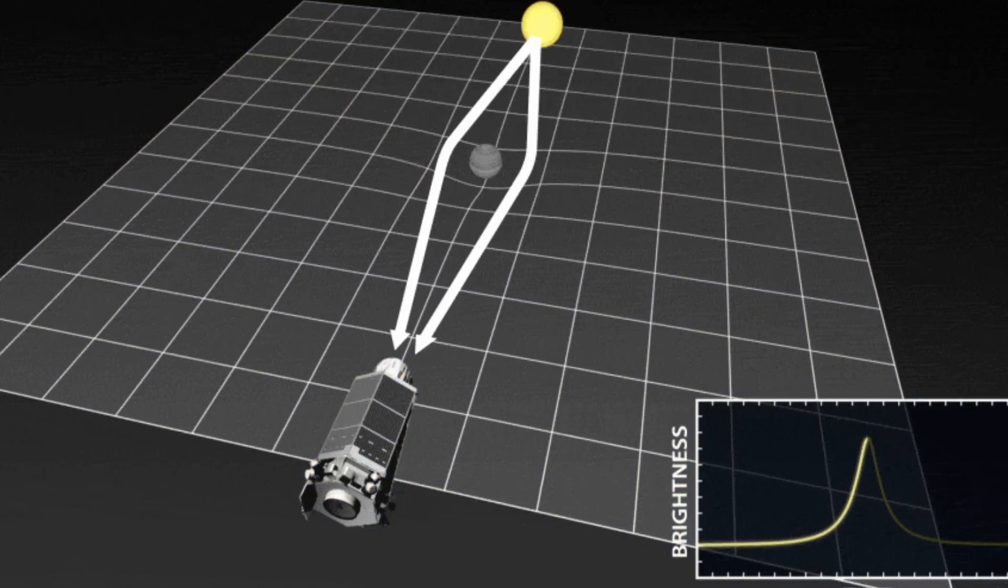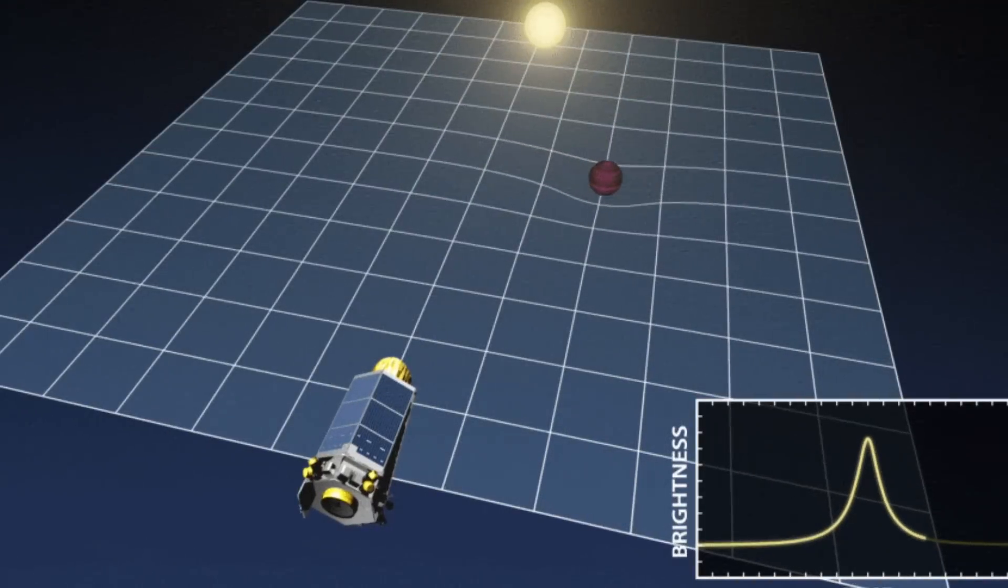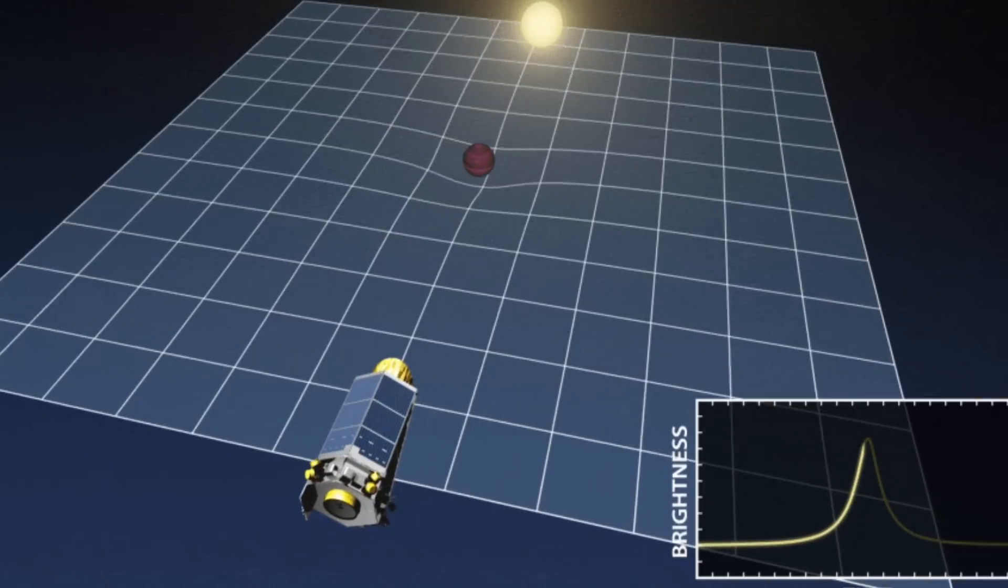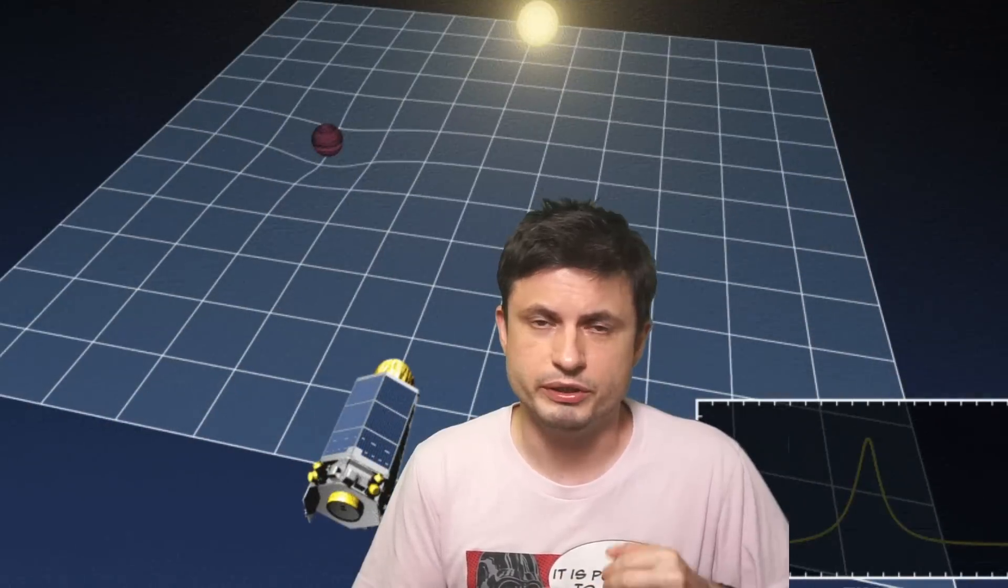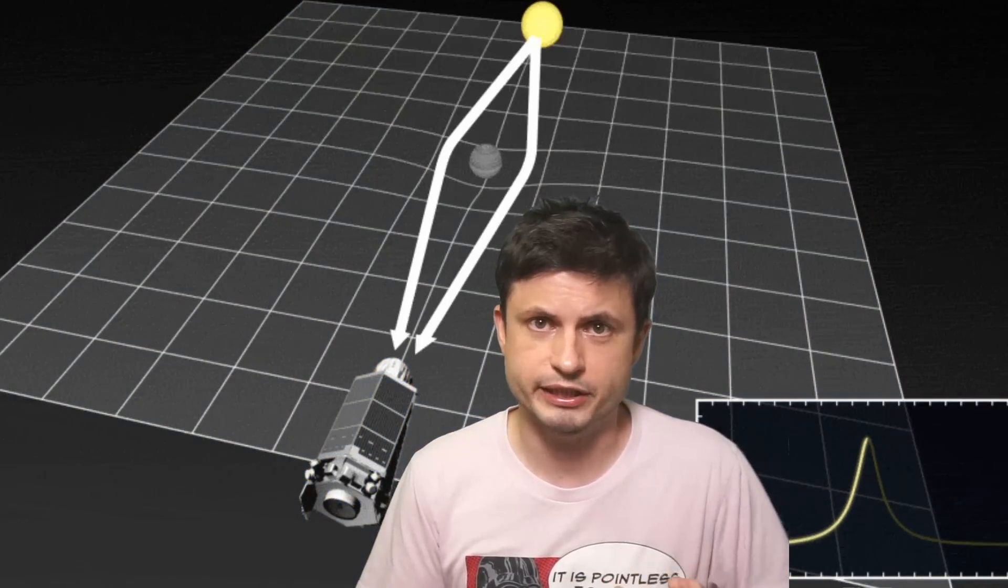The thing about the microlensing technique is that it's actually really good at detecting these objects even if they're relatively invisible in every other way. As of today, in the last few decades, approximately 30,000 different detections have been already discovered, with the majority discovered in the last eight years.